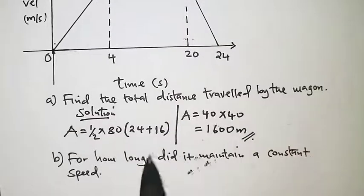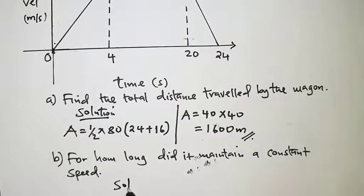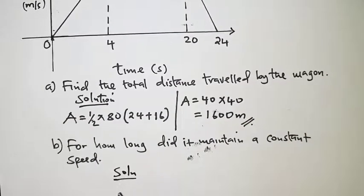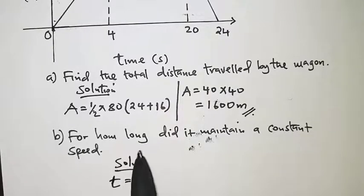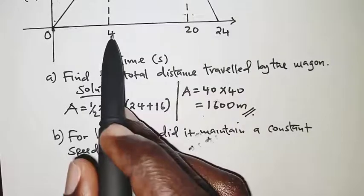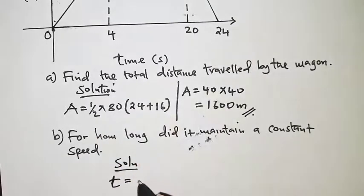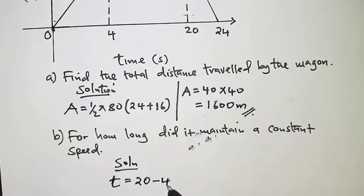So the time it took to maintain a constant speed was from 4 seconds up to 20 seconds. We get the difference: 20 minus 4, which is 16 seconds.